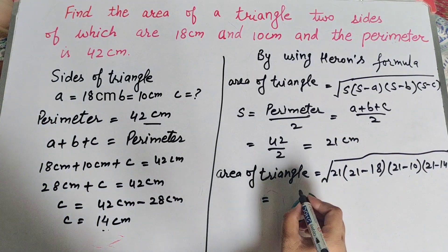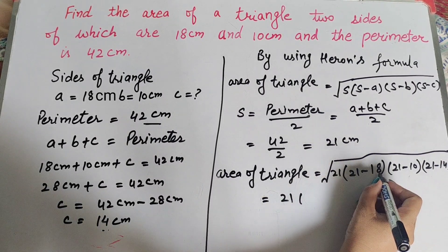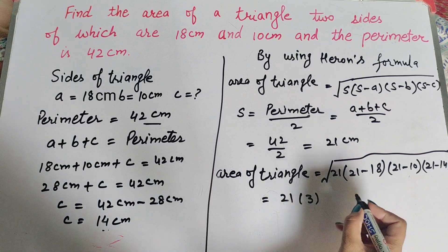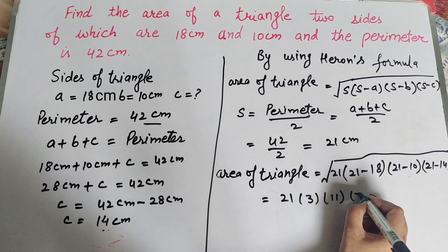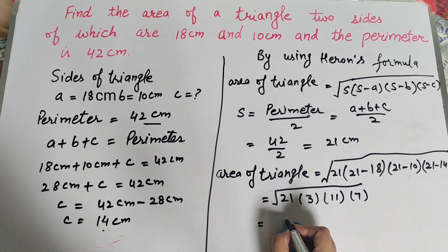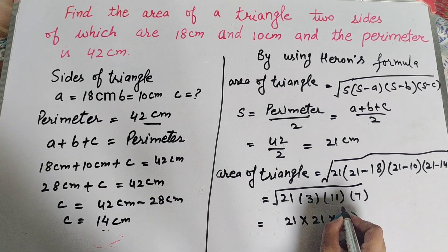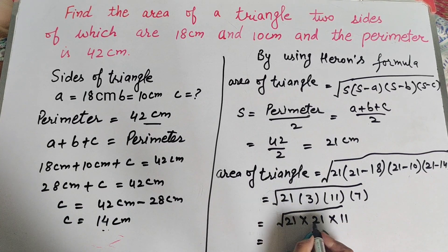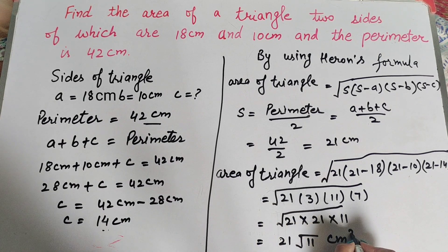So the area of the triangle equals the square root of 21 into (21 minus 18) into (21 minus 10) into (21 minus 14), which equals the square root of 21 into 3 into 11 into 7. That is 21 multiplied by 3 multiplied by 7 equals 21 into 21, so the area equals 21 square root of 11 cm squared.